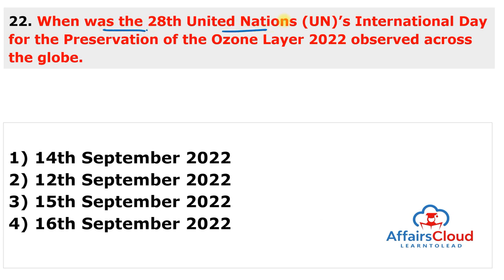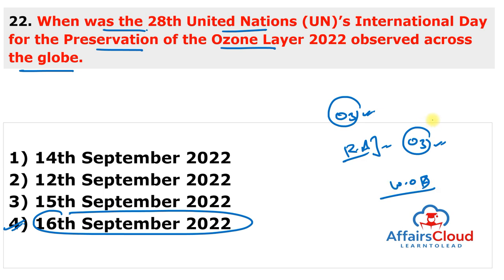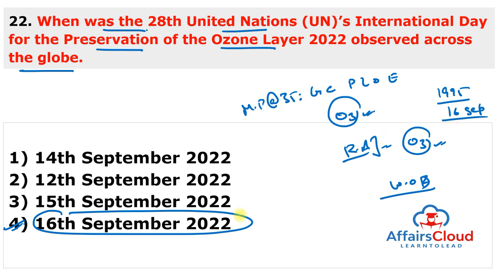The 28th International Day for the Preservation of the Ozone Layer 2022, also known as World Ozone Day, was observed on 16th September 2022. The theme was 'Montreal Protocol at 35: Global Cooperation Protecting Life on Earth.' The day aims to bring attention to ozone depletion and raise awareness about preserving the ozone layer. The first International Day for the Preservation of the Ozone Layer was observed in 1995, and 16th September 2022 marks the 35th anniversary of the Montreal Protocol.